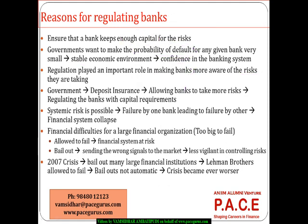From a different perspective, the government provides deposit insurance to individuals. When each individual deposits money with the bank, they do so confidently because even if the bank defaults or fails, the government will protect the interests of depositors. This is what we term deposit insurance. Because the government provides this additional layer of confidence, even banks become more aggressive in lending, since even if they default, the government will protect them.